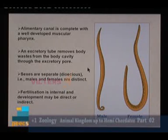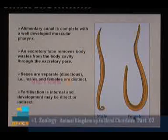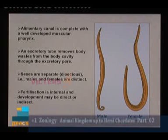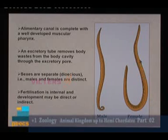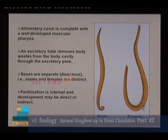They also possess morphological differences between male and female — this is called sexual dimorphism. The male is smaller than the female, and in the male the posterior region has a curvature, which is not present in the female. Sexual dimorphism is very clear in the case of Ascaris.